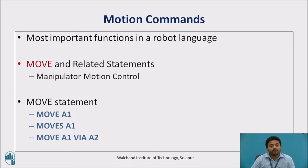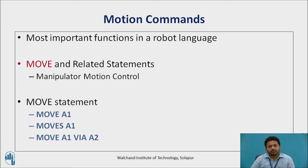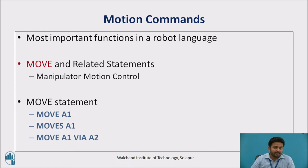Similarly, we have the command 'Moves a1', where the suffix 's' stands for straight-line interpolation. The controller computes a straight-line trajectory from the current position to point a1 and causes the robot arm to follow that trajectory. Another command is 'Move a1 via a2', which tells the robot to move its arm to point a1 but to pass through via-point a2 in making the move. These were the motion commands. Let us move to the next session for the remaining topics.